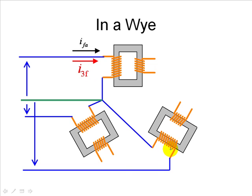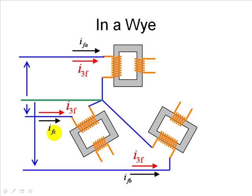I do not add a subscript to the triple frequency component because it is the same for all three phases — same magnitude and same phase. For the other transformers, we also have the fundamental component of phase B, a 60 Hz sinusoidal current, and a triple frequency component with the same magnitude and phase. The same applies to phase C. The 60 Hz fundamental components for phases A, B, and C are all offset by 120 degrees.